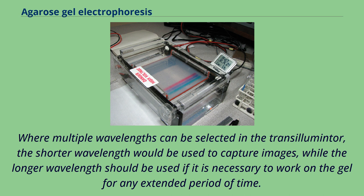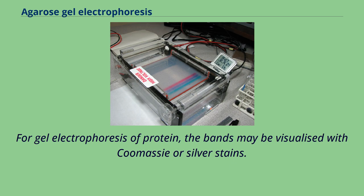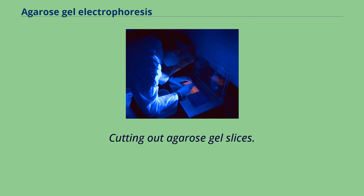The transilluminator apparatus may also contain image capture devices such as a digital or Polaroid camera to allow an image of the gel to be taken or printed. For gel electrophoresis of protein, the bands may be visualized with Coomassie or silver stains. Protective equipment must be worn when using a UV transilluminator.